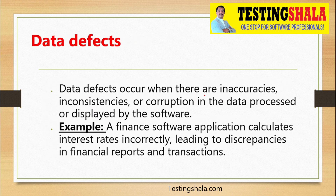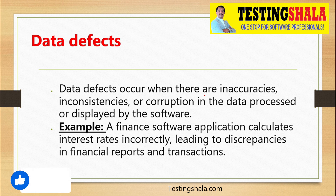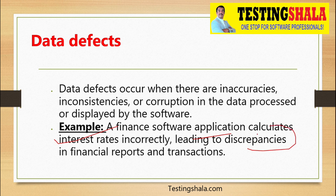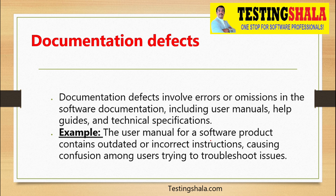The next type is data defects. Data defects occur when there are inaccuracies, inconsistencies, or corruption in the data processed or displayed by the software. If data is getting corrupted, inconsistent across pages, or not retrieved accurately, those issues are categorized under data defects. For example, in a finance application, if interest rates are not calculated properly, it leads to inaccurate financial reports and transaction amounts, creating bigger challenges for the end user.